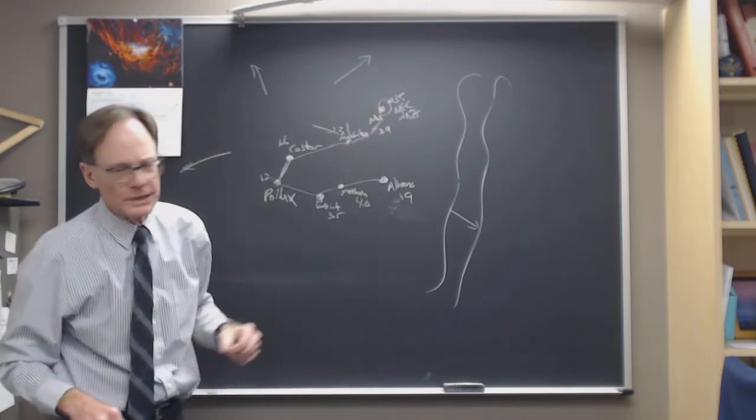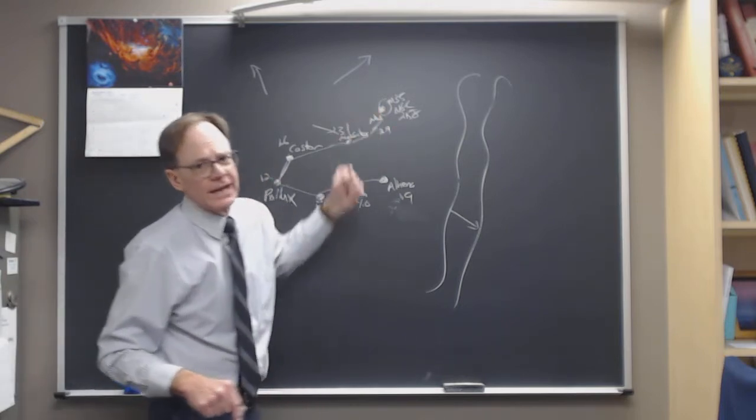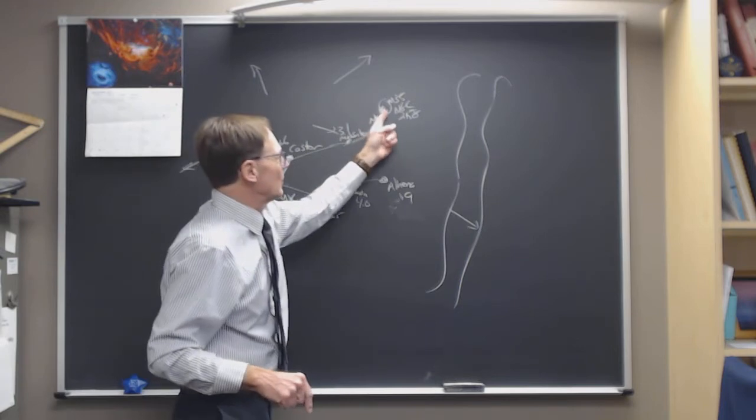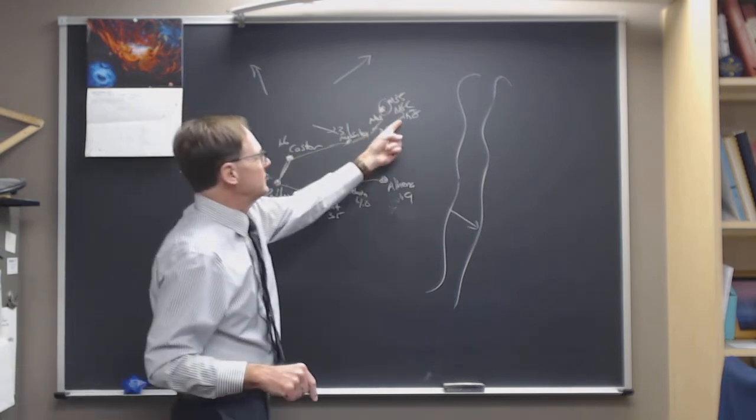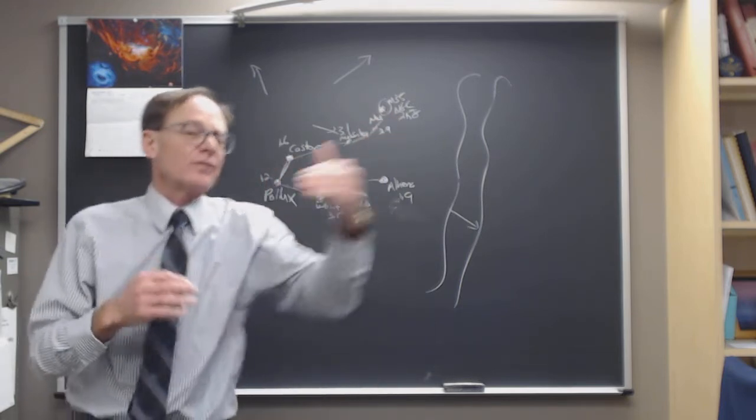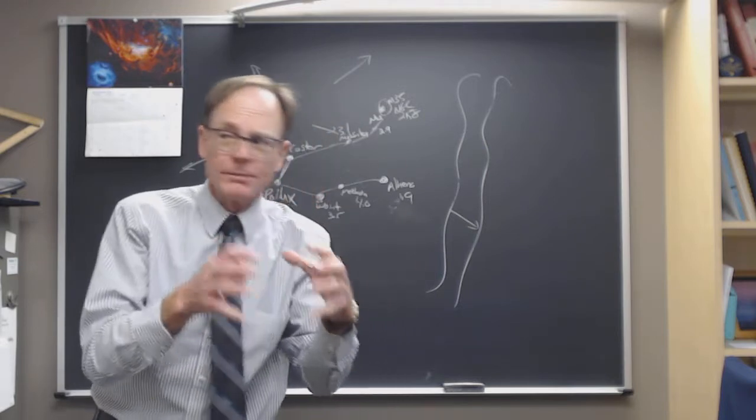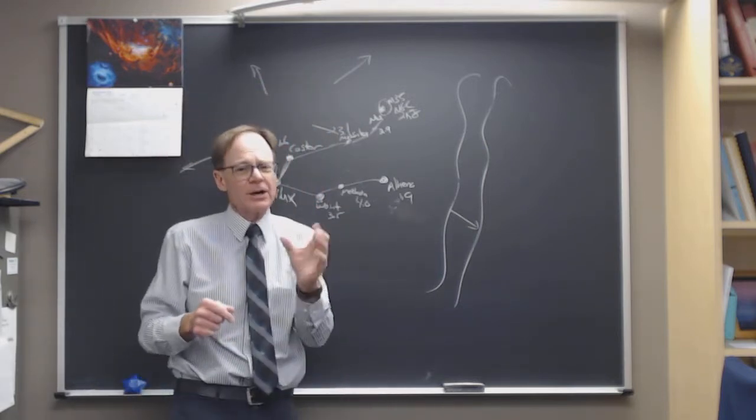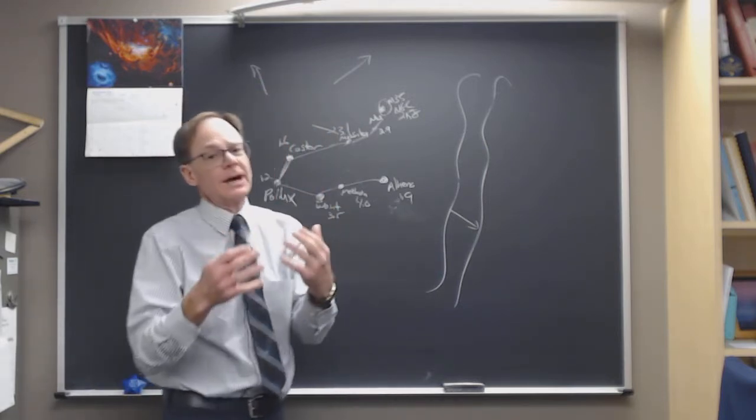And so these constellations that are close to the disk of our galaxy are often rich in open star clusters. M35 is a beautiful one, and it's worth checking out in a small telescope. But so is one right next to it, half a degree away, NGC 2158. It's much further away, much denser, more stars. It's richer, a little bit harder to see. They're fainter stars, but there's a lot more of them, a lot more densely packed in, a lot richer.